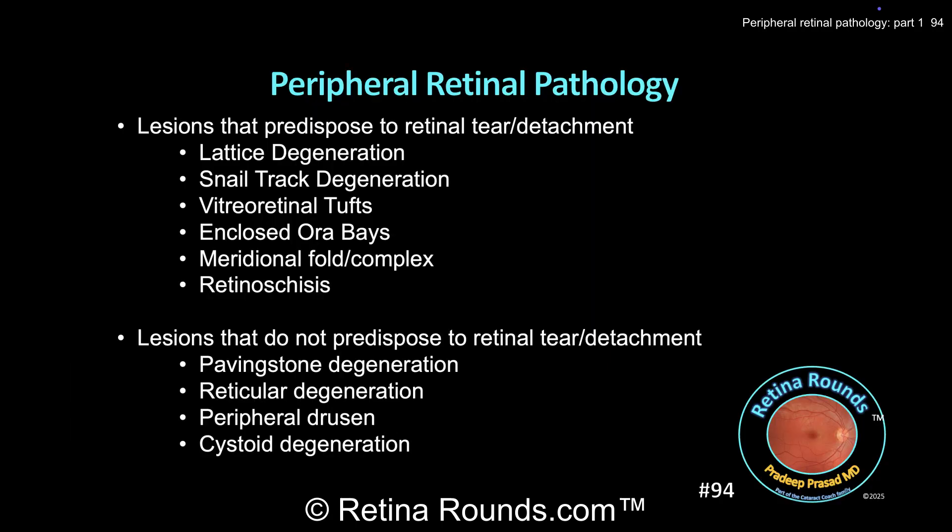Let's distinguish lesions that predispose to a retinal tear or detachment from those that do not. Lesions that predispose include lattice degeneration, snail tract degeneration (which has many features similar to lattice), vitreo-retinal tufts, enclosed ora bays, meridional folds or complexes, and retinoschisis. Lesions that don't predispose to retinal tear or detachment include paving stone degeneration, peripheral reticular degeneration, peripheral drusen, and typical cystoid degeneration.